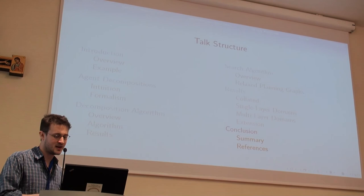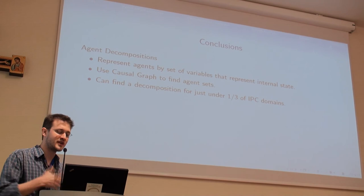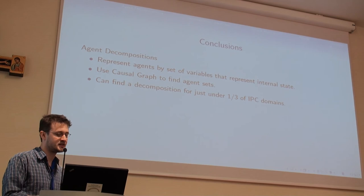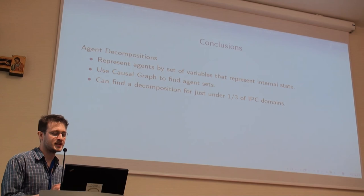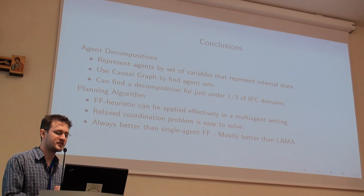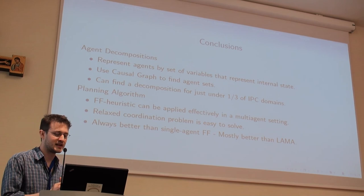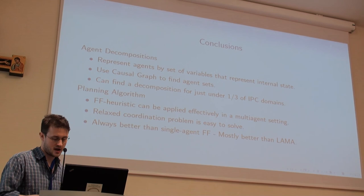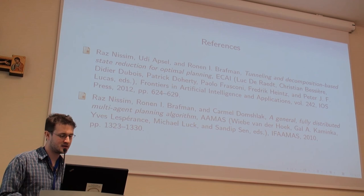In summary: agent decompositions represent agents by variables as their internal state, and we can use causal graphs to find these decompositions — we find a decomposition in just under a third of the IPC domains. In terms of search, we've shown that the FF heuristic can be applied effectively in multi-agent settings, the relaxed coordination problem is quite easy to solve, the approach is always better than single-agent FF, and ends up being mostly better than Lama. Those are the references from the papers mentioned in the talk.